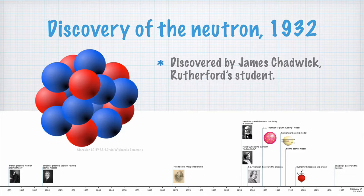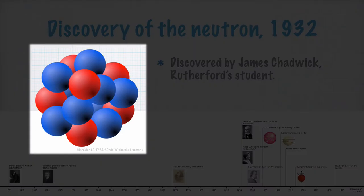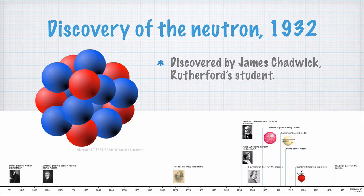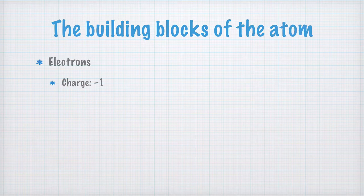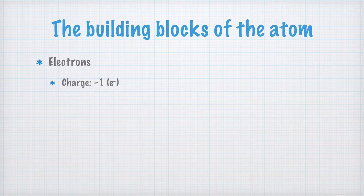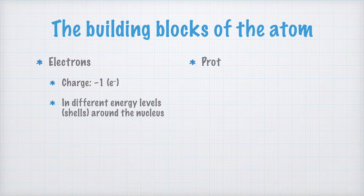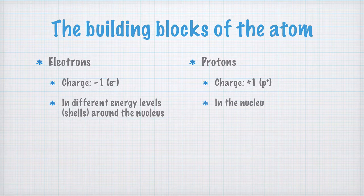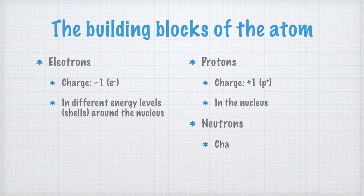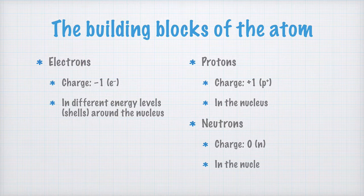But nuclear physicists weren't yet satisfied. Can we divide the protons and the neutrons further? Yes, we can, but this is beyond the scope of this chemistry course, and I will not dive into that here. Instead, we can now summarize what the main building blocks of the atom are. We have the electrons with a charge of minus one, and we write them E minus. They can only be found in certain energy levels or shells around the nucleus. The protons have a charge of plus one, and we write them P plus. They can be found in the atomic nucleus. And finally, we have the neutrons. They are uncharged, that is, they have no charge at all. We write them N, and they are also found in the nucleus.